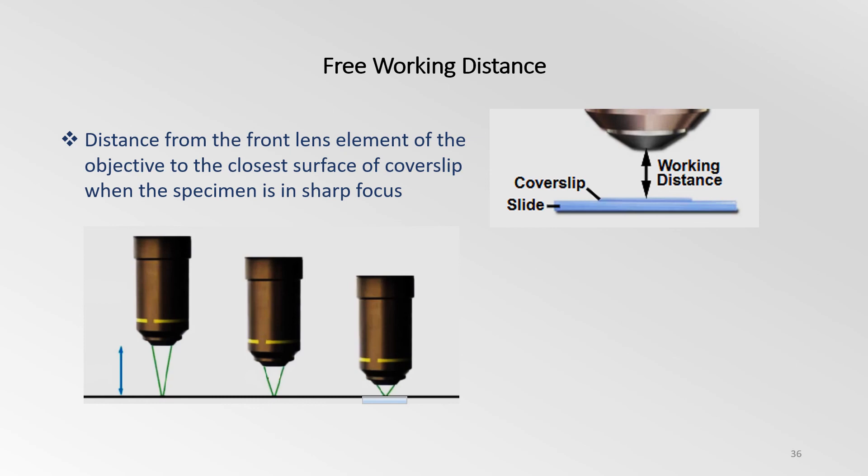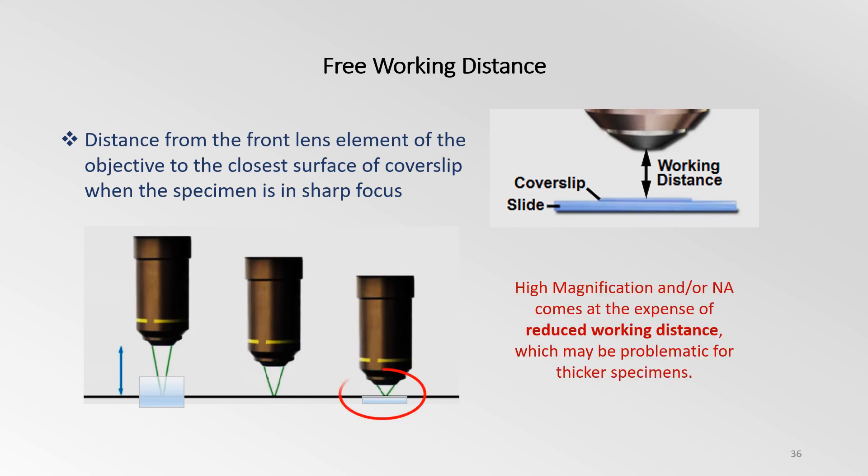But when you are imaging samples that are in thicker vessels, such as plastic well plates, you will probably need an objective that has a longer working distance. High NA objectives usually have very short working distances. So if you have a thick sample, you might have to consider instead a lower NA objective with longer working distance.